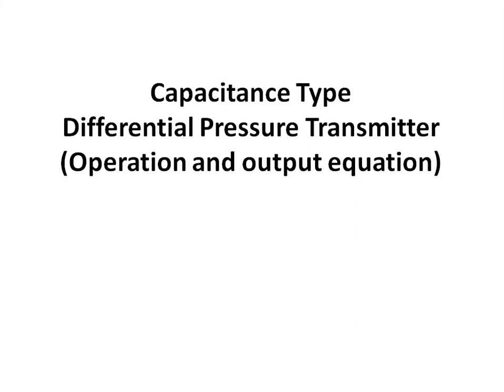In this video, we will discuss the capacitance type differential pressure transmitter. There are different types of DP transmitters like piezo-resistive type, piezo-electric type, force balancing type, capacitance type, and many others. Out of all these, the capacitance type DP transmitter is commonly used in industries.